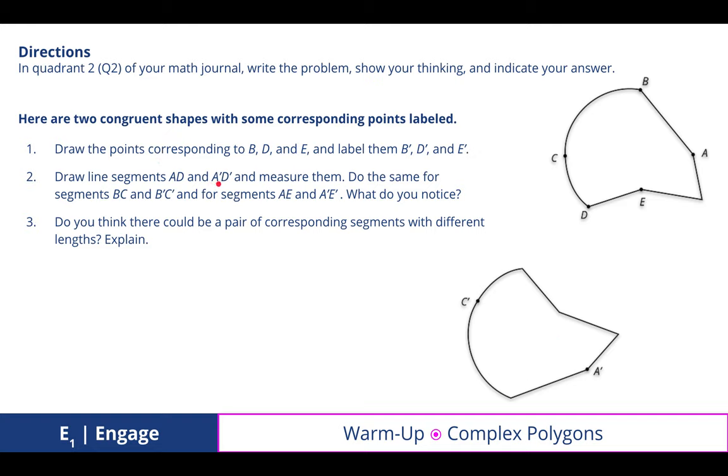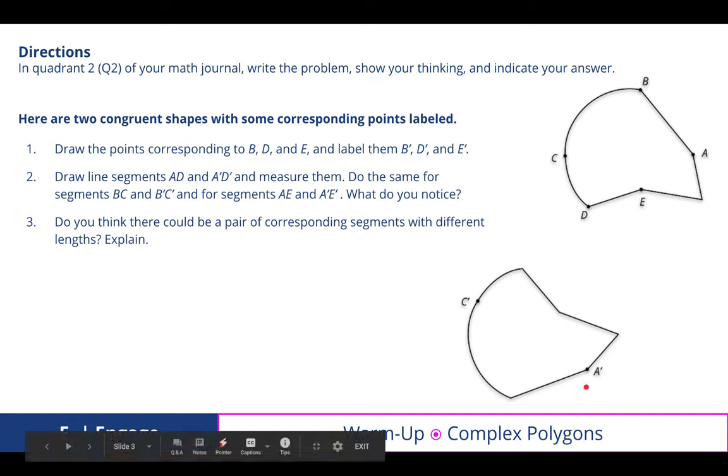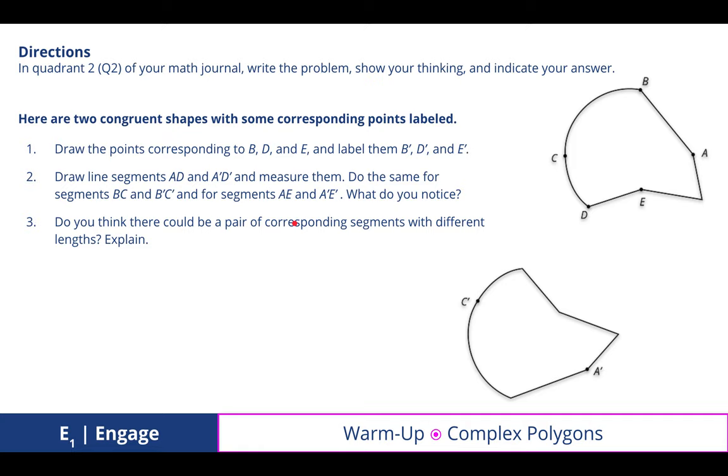Draw a line segment AD to A'D' and measure them. What we learned is that because these are congruent, the line segments that go to corresponding angles are also congruent. Do you think there could be a pair of corresponding segments with different lengths? If they're corresponding, we discovered, then they are always going to be congruent as long as the images themselves are also congruent.